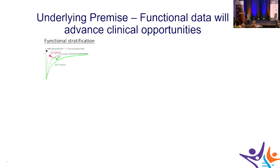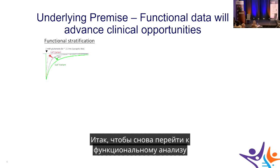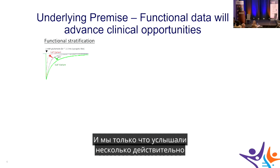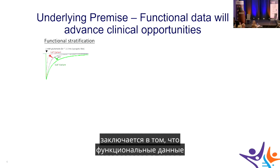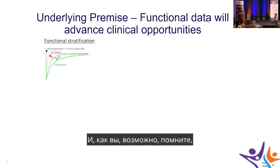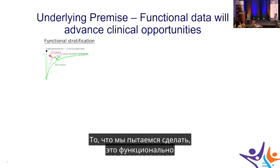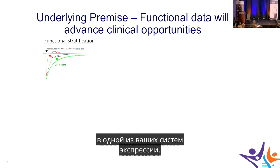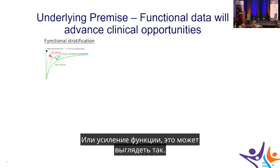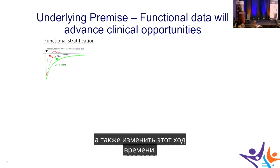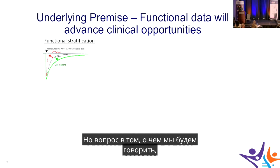Functional data will advance clinical opportunities. The goal is to functionally stratify patients by simulating synaptic current in expression systems. When a mutant is expressed, the wild-type current is the reference. Loss-of-function changes produce smaller currents with altered time course, while gain-of-function changes produce larger currents with a different time course. It's the combination of amplitude and time course that determines whether a variant is gain or loss of function.